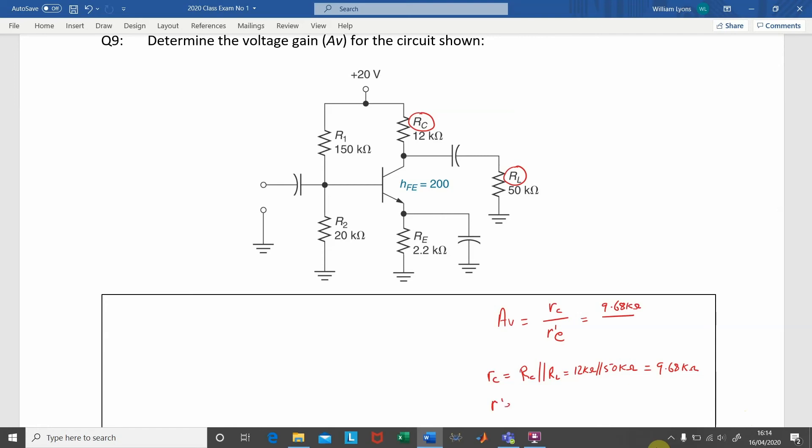We have a formula for R'E, it's equal to 25 millivolts divided by the emitter current, IE. So, our next step is to find the value for IE, the emitter current.